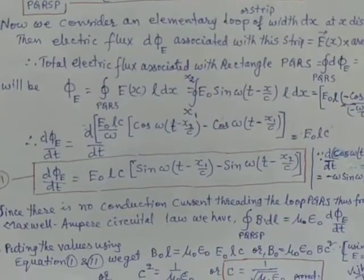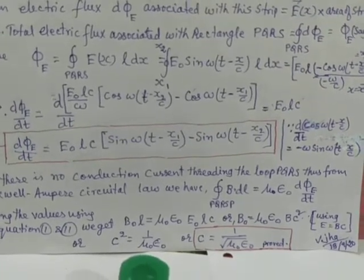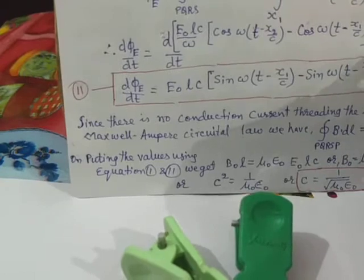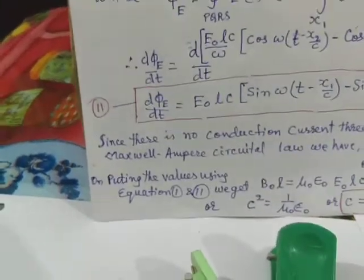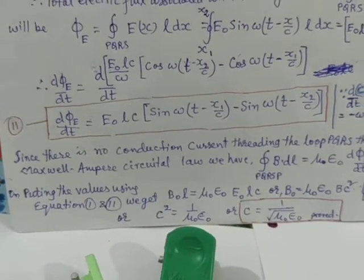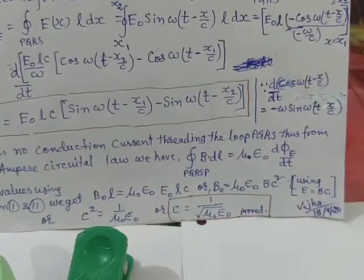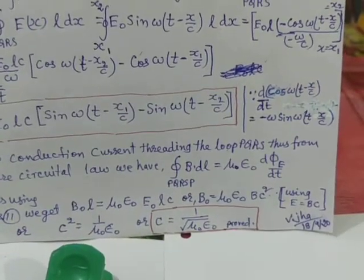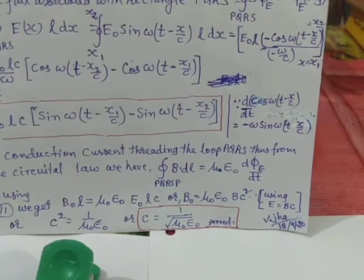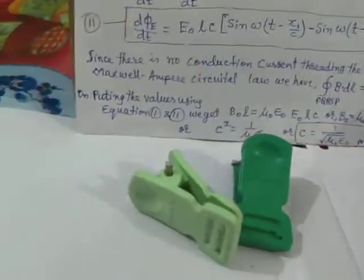On putting this value, d phi E by dt equals the differentiation of that term, which becomes E₀Lc times [sin(ωt minus x1 by c) minus sin(ωt minus x2 by c)]. This is because differentiating cos(ωt minus x by c) with respect to time gives minus omega sin(ωt minus x by c).